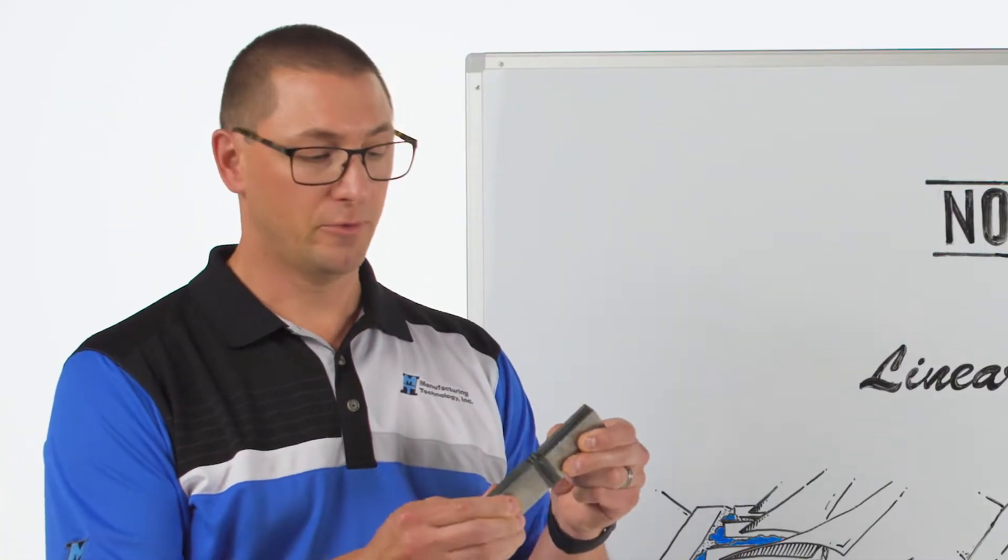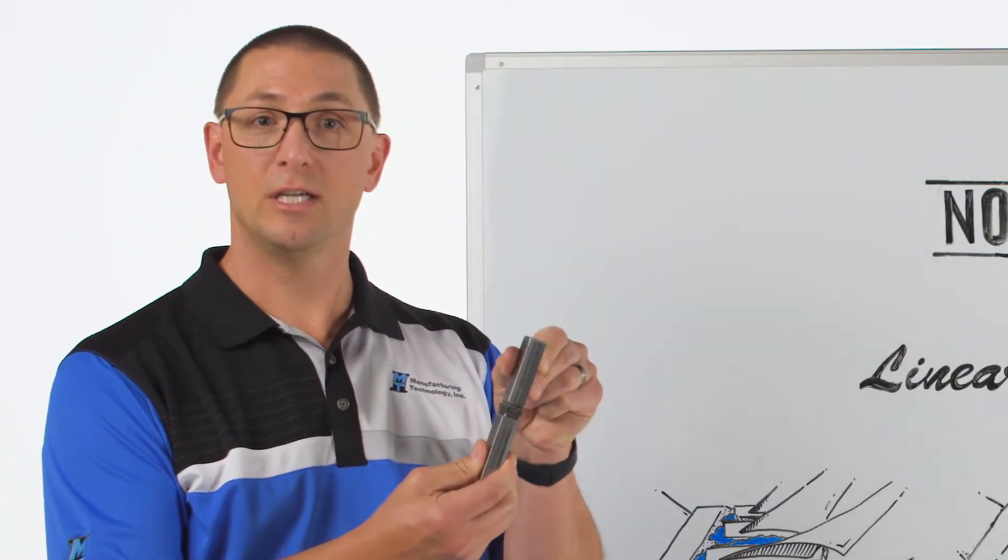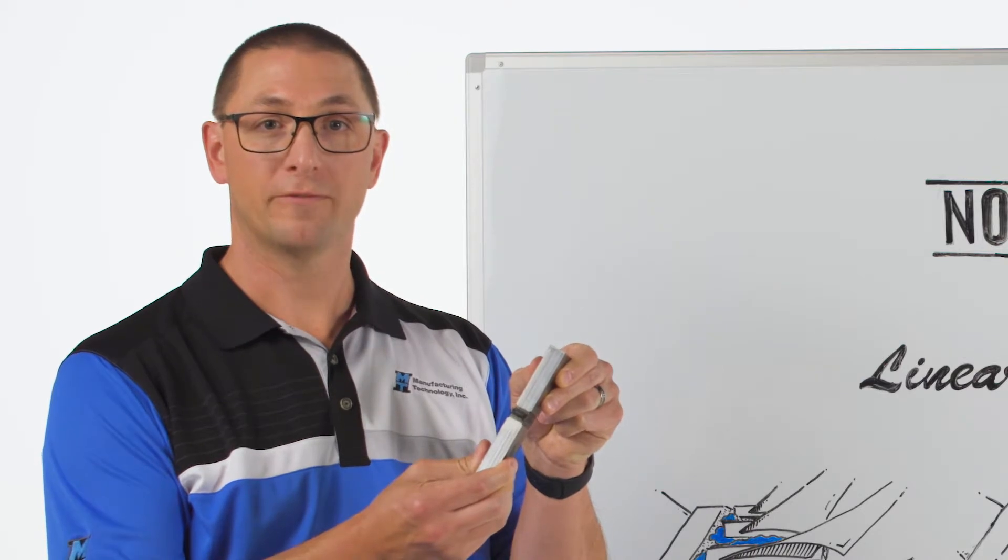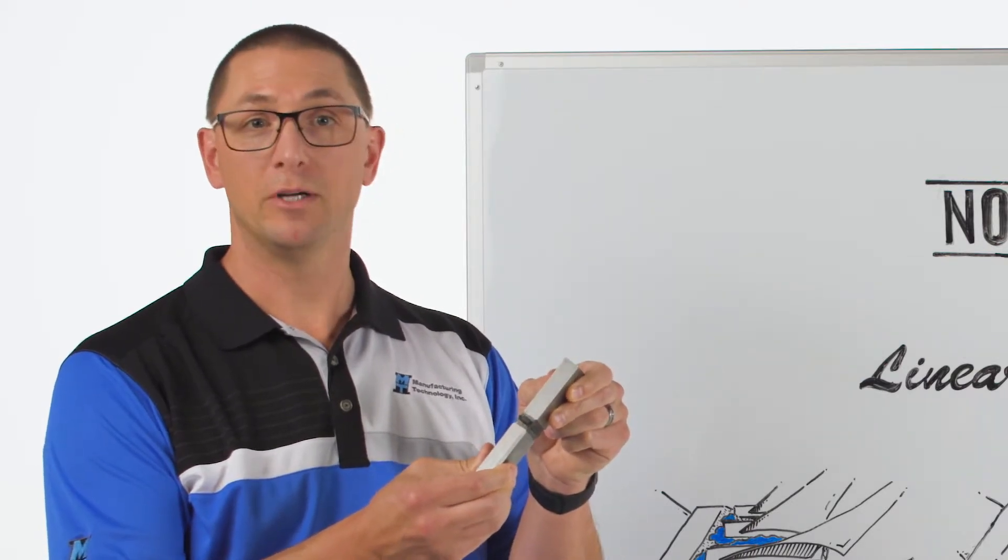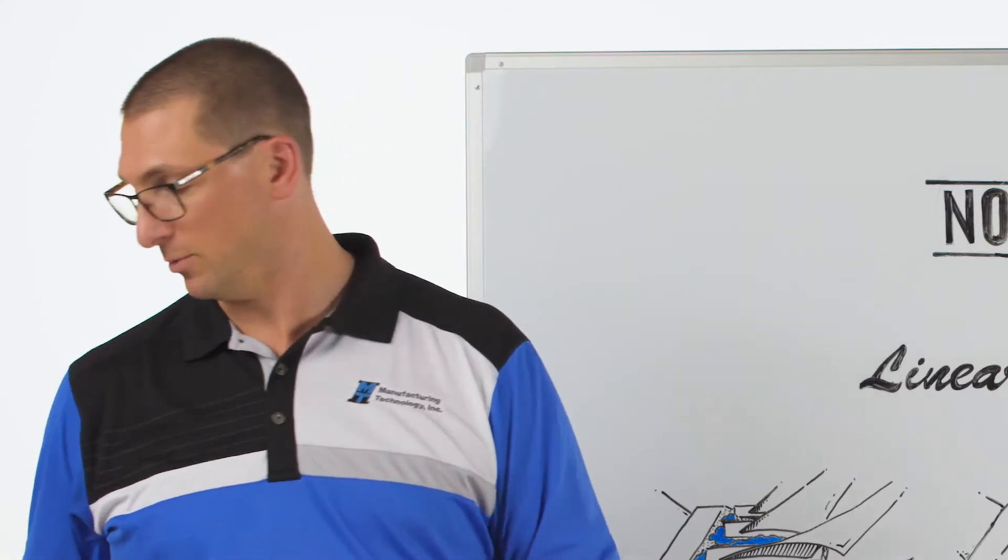If we look at a low force friction weld of titanium you can see what this bulge looks like from a flash geometry standpoint and how it would be much easier to machine after welding.